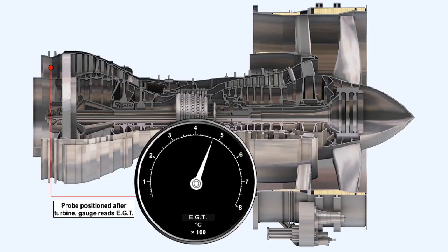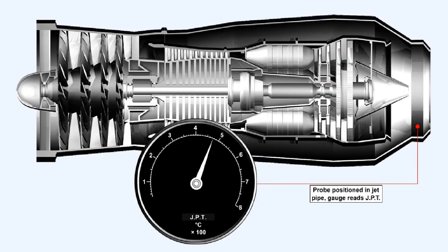On the type of engine where the temperature of the gas within the turbine is too high for the metal of the probes to stand it, the probes may be positioned after the turbine, and the gauge calibrated to read Exhaust Gas Temperature, or EGT. On other engines, it may be found convenient to combine the temperature probes with the pitot probes, which measure Exhaust Gas Pressure, P7. In this case, the gauges will read Jet Pipe Temperature, or JPT.